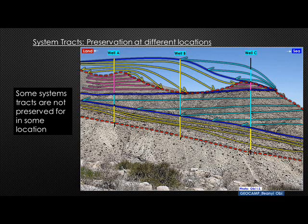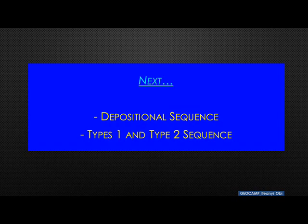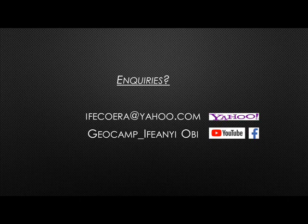This slide shows that if we drill a well in different locations, not all system tracts are encountered, due to differential position. There are areas where all system tracts are preserved, but in others one or two may be missing depending on the relationship between overlying and underlying stratigraphic units. Thank you for listening. In our next episode, we'll look at depositional sequences — type one and type two — and hopefully wrap the whole story together. If you have questions, please send an email or message on WhatsApp, Facebook, or YouTube.